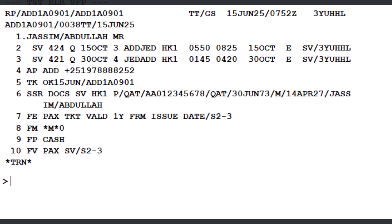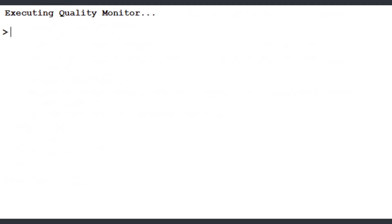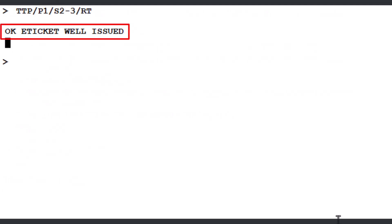However, it's better to issue tickets by using the passenger and segment numbers instead of the TST number. In our example, type TTP (the command to issue the ticket), slash P1 (for passenger 1), slash S2-3 (meaning segments 2 to 3 in the PNR), slash RT (keeps the PNR open after the ticket is issued), then press Enter to proceed. If you see 'OK ticket' or 'OK ticket will be issued,' it means the ticket has been issued successfully.